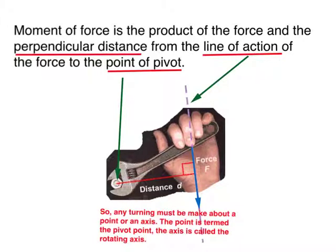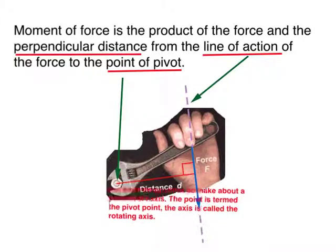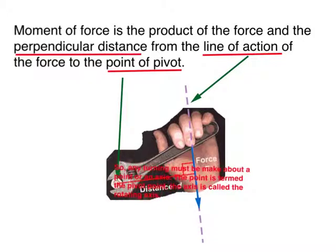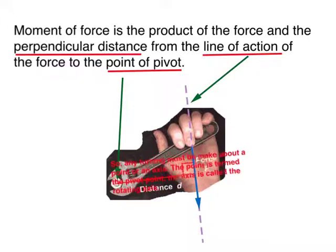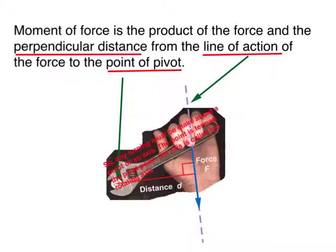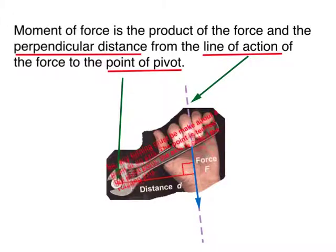For the case of the turning of this panel, it is happening like this: when this panel experiences a force from the hand, it is going to turn about the pivot this way.